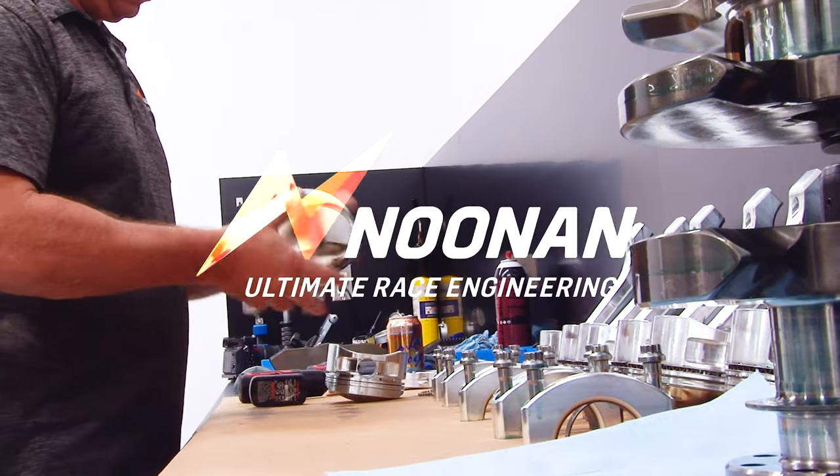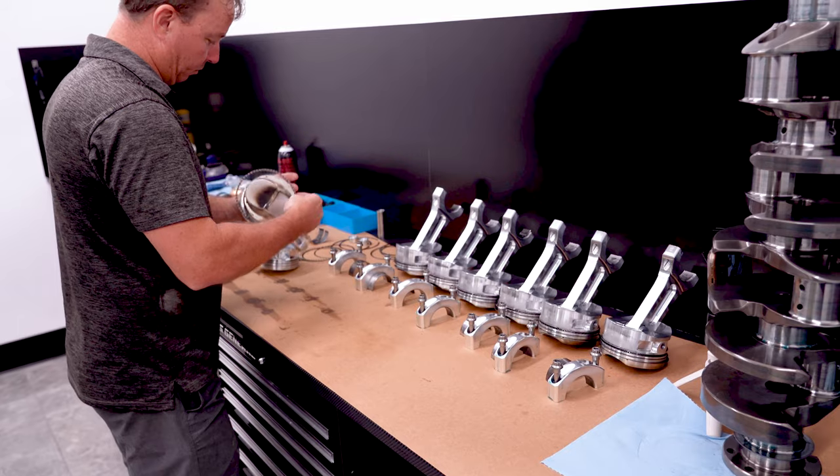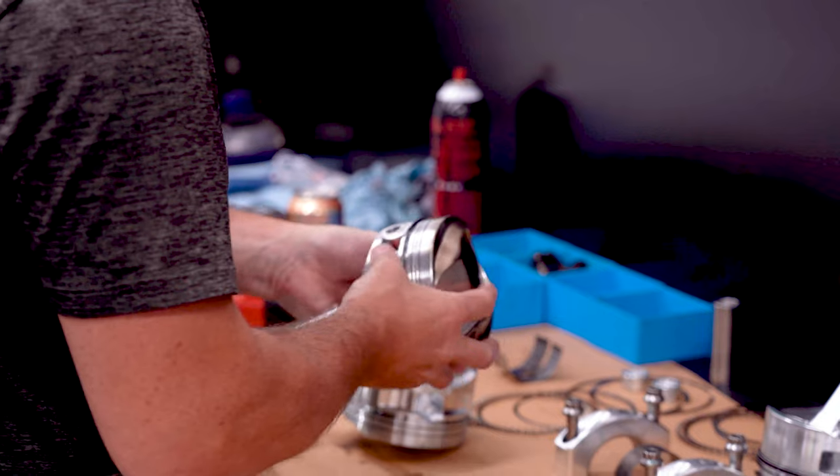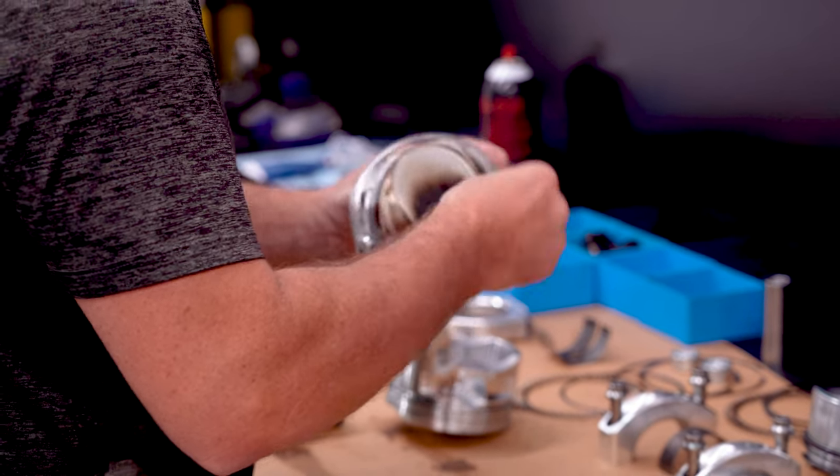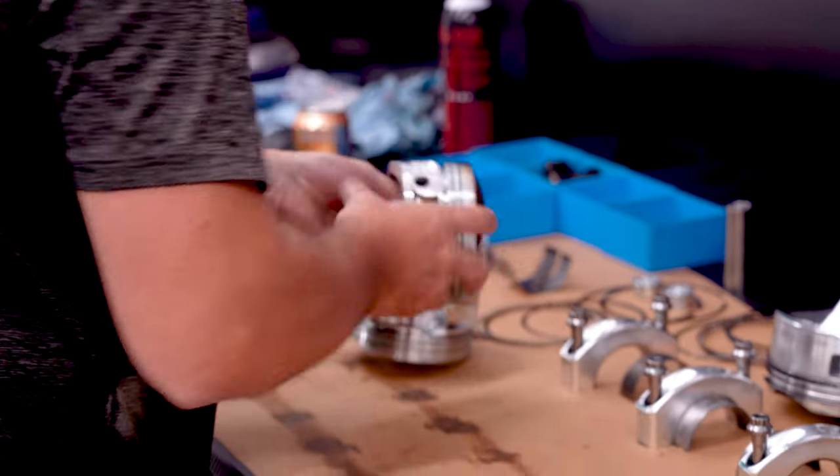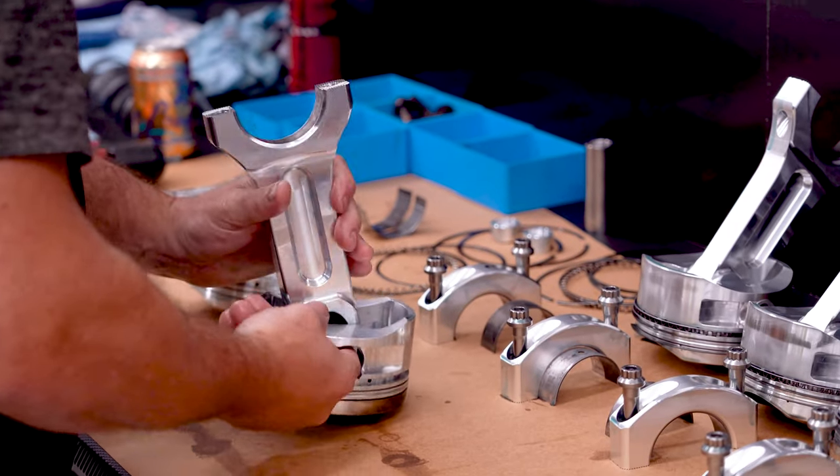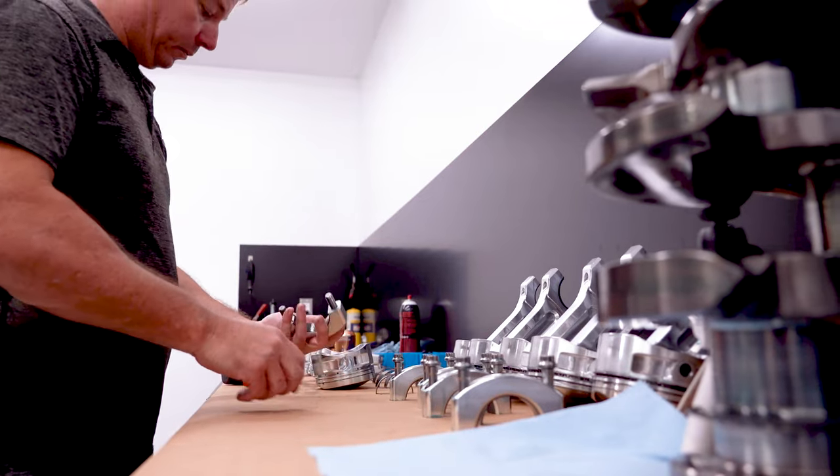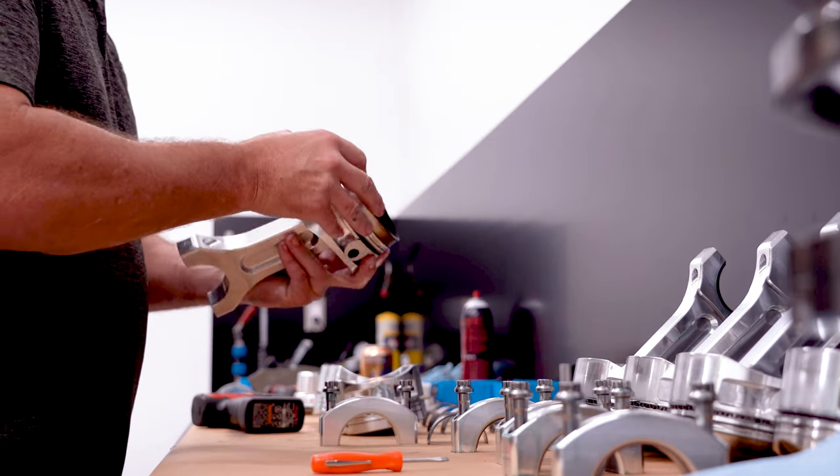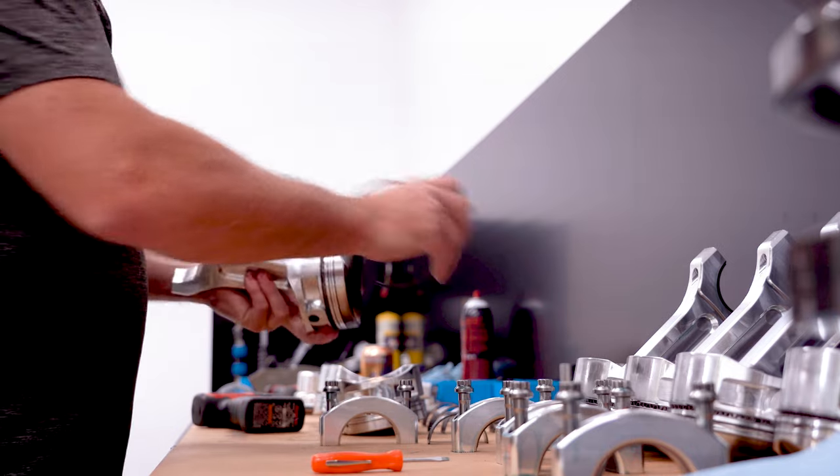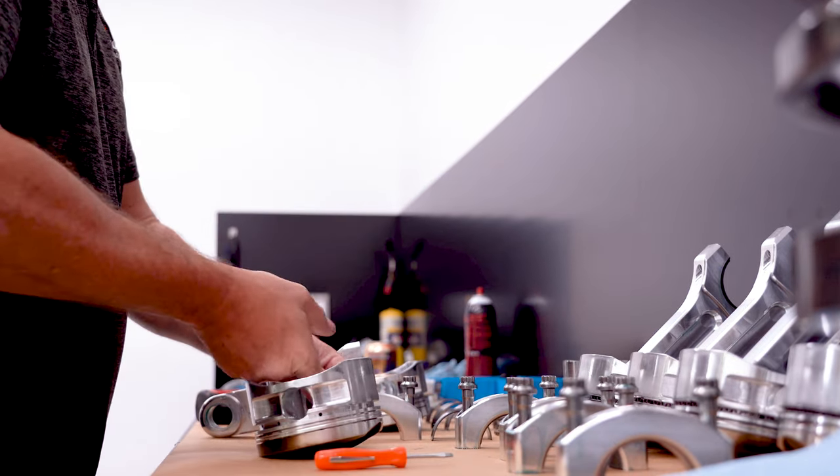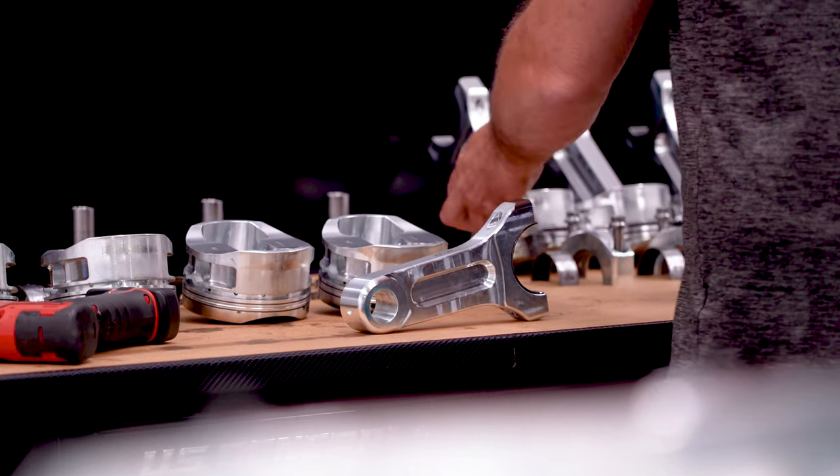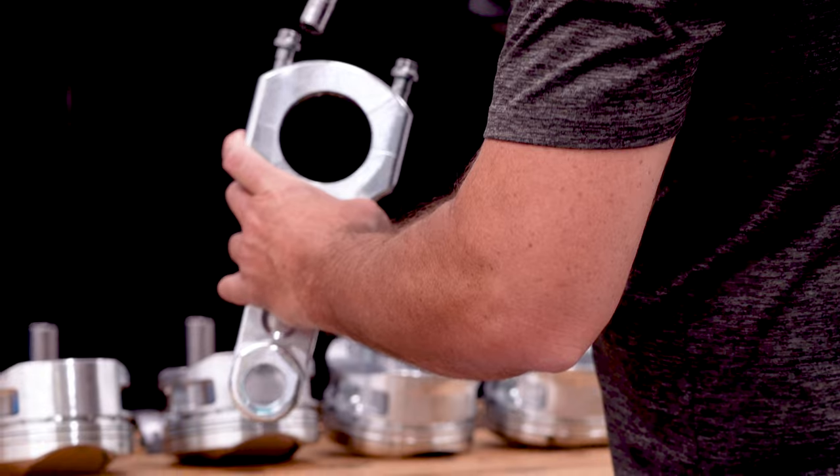Hey everyone, welcome to the Noonan Race Engineering YouTube page. Today we're going to go through a piston and rod rack for an engine that's come in for service. We're going to go through all the steps for inspecting a used set of pistons and rods, our inspection methods, what they tell us, and how a racer at the racetrack could use these tools to identify what's going on inside their engine. We'll talk about how associated components like the wrist pin wear and the piston affect the connecting rod.